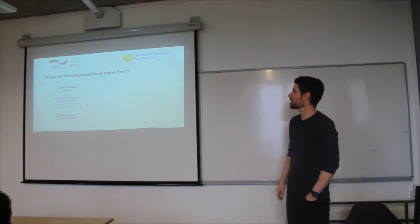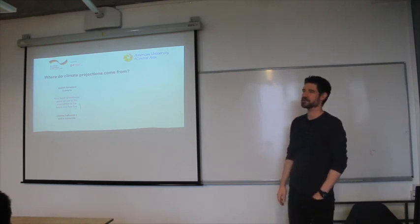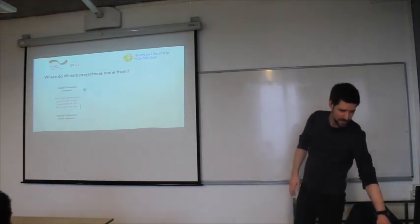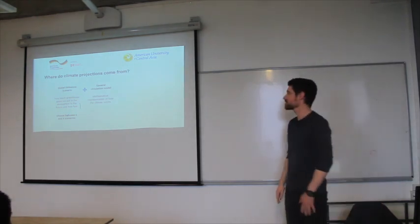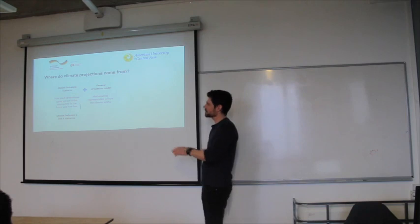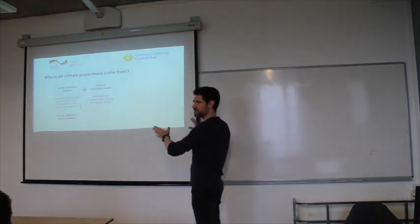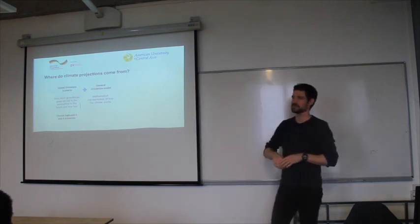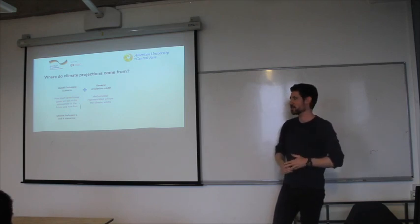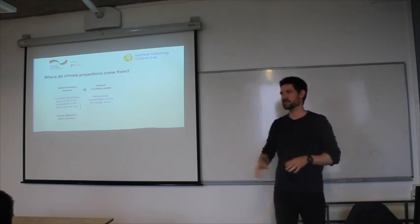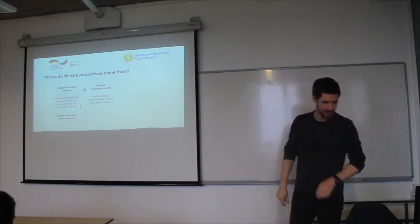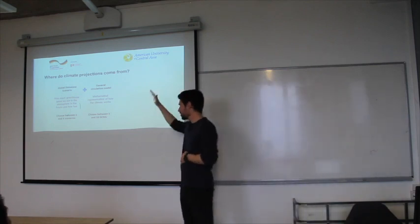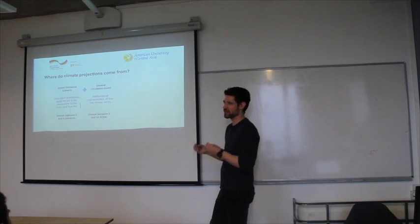So this basically, you have global emission scenarios, so how much greenhouse gas we put into the atmosphere in the future and how fast. And they actually, based on this IPCC, so the Intergovernmental Panel on Climate Change, there are, I think, roughly four scenarios. And then you take what is called a general circulation model, and this is basically the figure I showed you before. It tries to represent this Earth's climate system, it's a mathematical representation of how the climate works, connected to how Earth's climate system, also in spherical circulation and so on, very sophisticated.